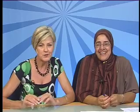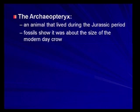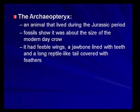During this Cambrian period there was a very strange, bird-like structure - Archaeopteryx. Now fossils show it was about the size of a modern-day crow. It had feeble wings, a jawbone lined with teeth, and a long reptile tail covered with feathers.